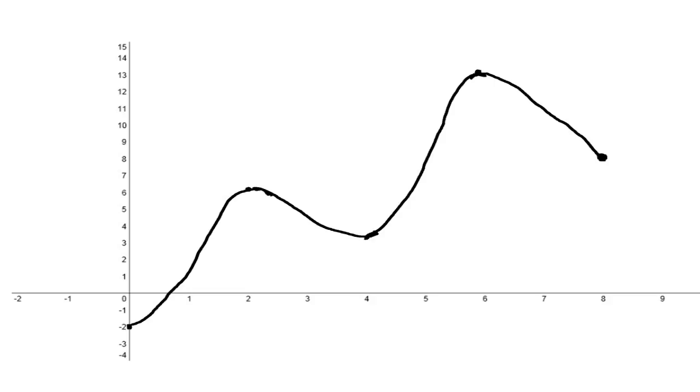In our graph, f has a local max at x equals 2 here. Notice this little bump. It's a little local maximum and it also has a local minimum at x equals 4. So here there's a little minimum here, a local minimum.